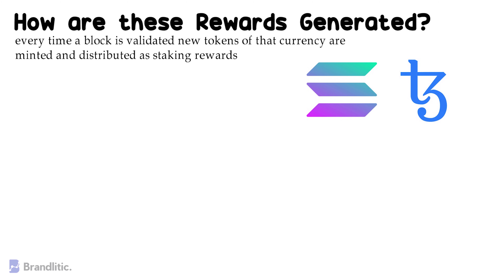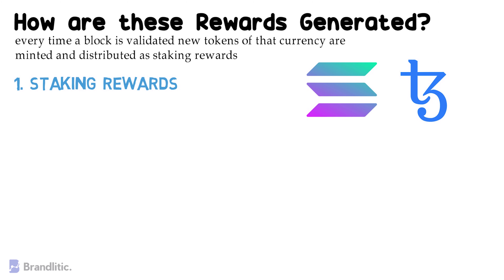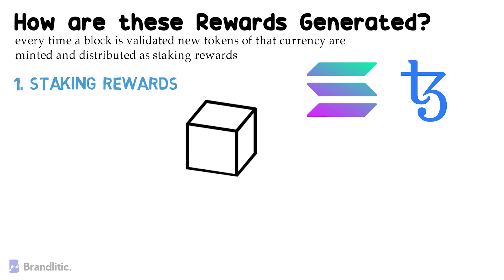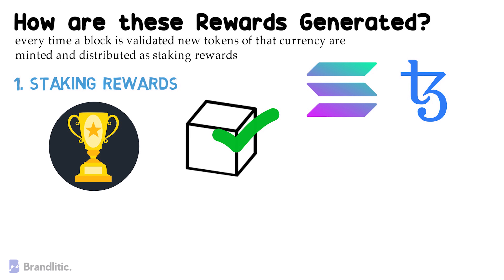Primarily, there are two types of rewards that get distributed. First, staking rewards: you stake your crypto assets with a proof-of-stake node to validate a block of transactions. If the node you have delegated to successfully signs or attests to blocks, you receive a staking reward, thereby increasing your net crypto assets.